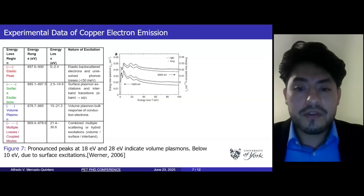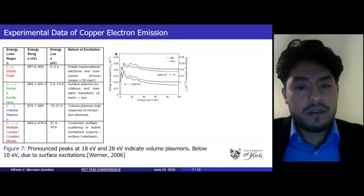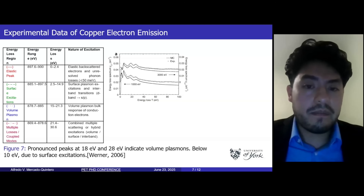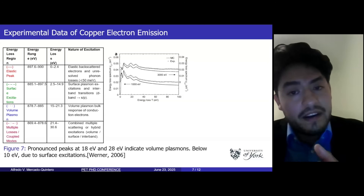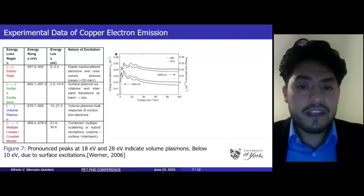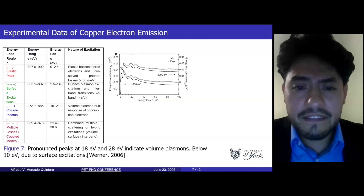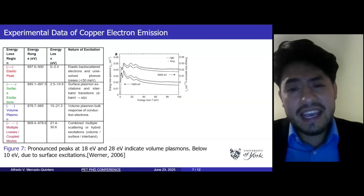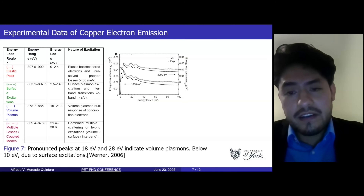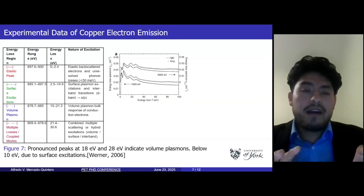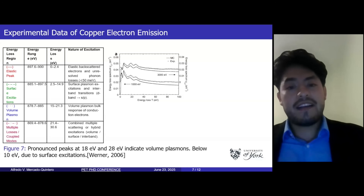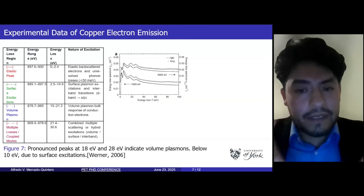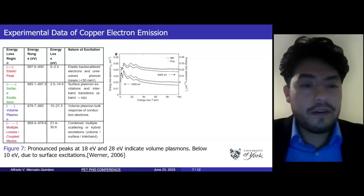Here we observe the characteristic energy loss regions in copper. The elastic peaks are near 900 eV, the surface plasmon excitations are between 885 and 897 electron volts, the volume plasmon is around 878 eV, and multiple coupled excitations appear below 878 eV. These peaks are important because they help us understand how electrons transfer energy to the material and reveal mechanisms such as surface and volume excitations, which are relevant for modeling bio-equivalent material behavior in radiotherapy contexts.